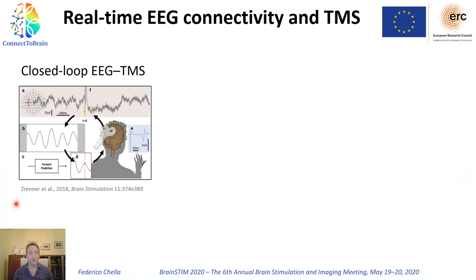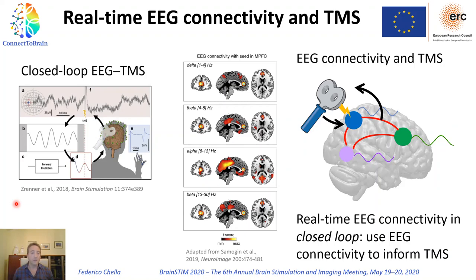So far, the protocols used for closed-loop stimulation mainly rely on the analysis of EEG activity, mainly based on information coming from amplitude or phase of the EEG signal. Recently, there has been an interest in exploiting information coming from EEG connectivity. EEG has sufficient temporal resolution to directly investigate the functional coupling between brain sources, and has been successfully used to investigate brain connectivity and functional organization of the brain into networks at different time scales. The use of real-time EEG connectivity to inform TMS in a closed-loop system represents a new avenue for closed-loop stimulation, allowing us to track changes of not only activity but also connectivity between sources in real-time.